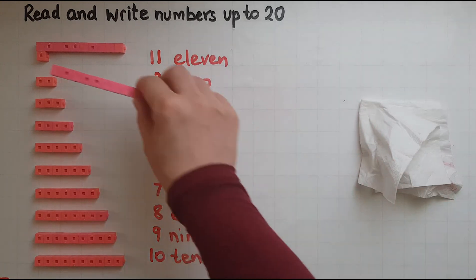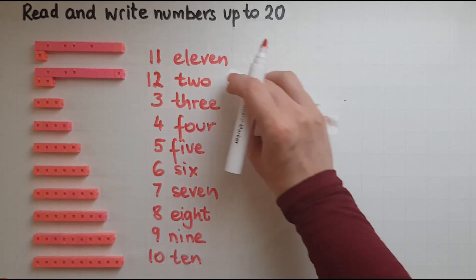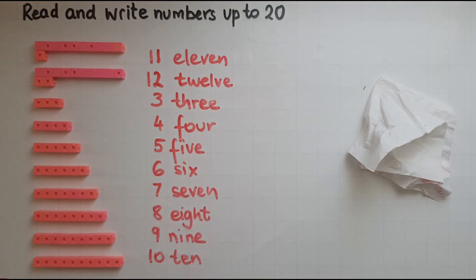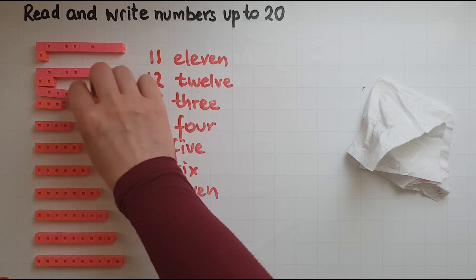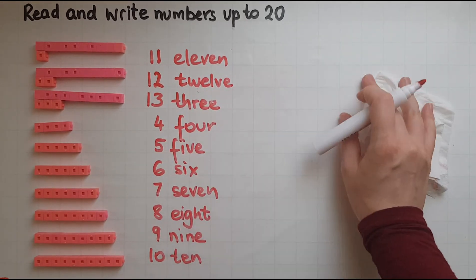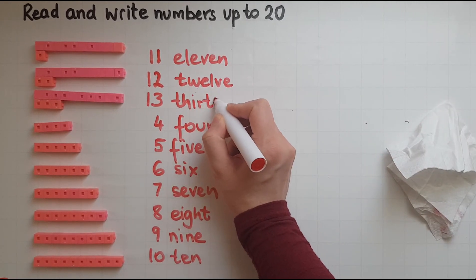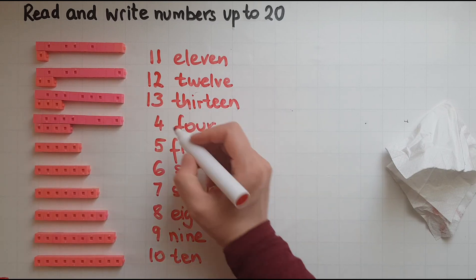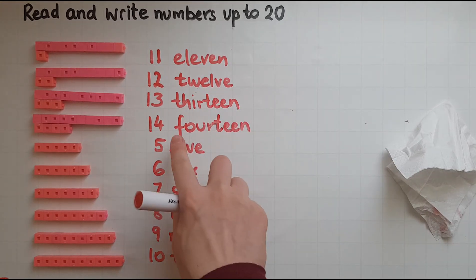There are two, so ten and two is twelve. Notice the difference between the two. So ten and three makes thirteen — I just add one in front, so three is turned into thirteen. Ten and four is fourteen. Just add the ten at the end — so four becomes fourteen.